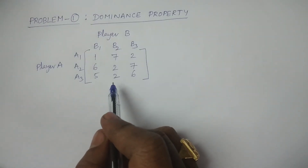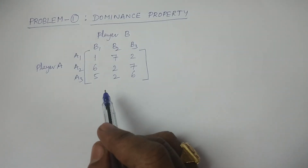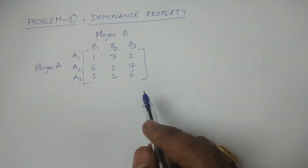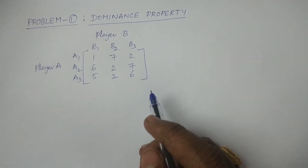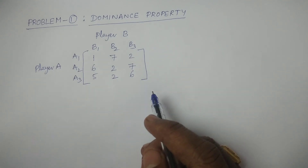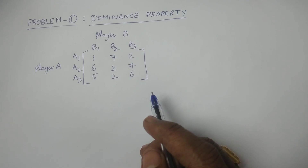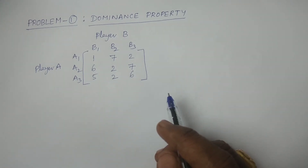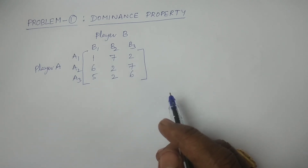Consider this kind of problem: player A having three strategies and player B having three strategies, which means an M by N game. By using the dominance principle, we can reduce it into a two by two rectangular game and then solve the game problem by using the usual procedure of two by two rectangular games without a saddle point.